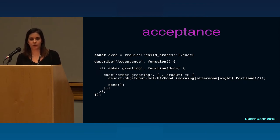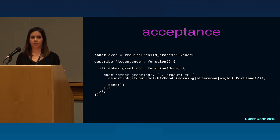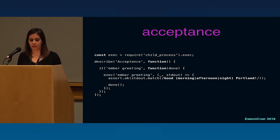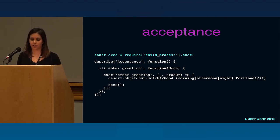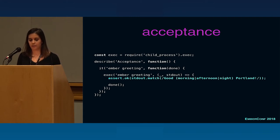For acceptance testing of a command, we want to check that the command actually runs. We need something similar to a shell. We can use the Node child_process library to execute a command just as you would execute any shell command. So we execute 'ember greeting' and take the output and check that the message matches what we wanted.